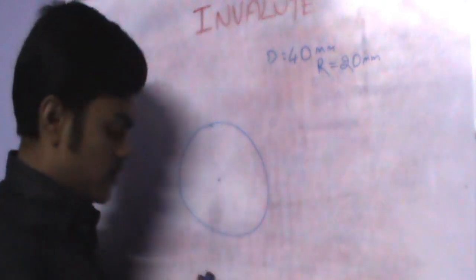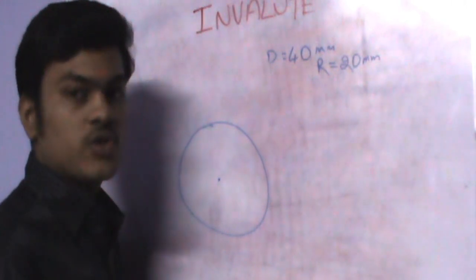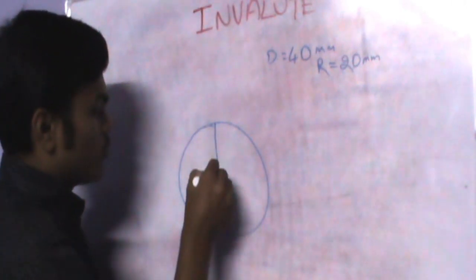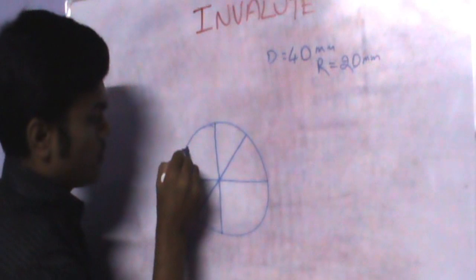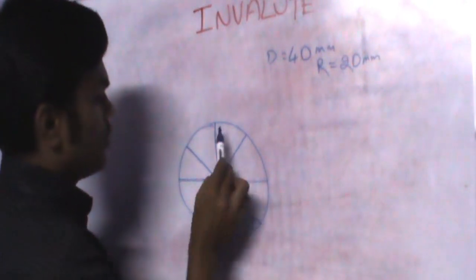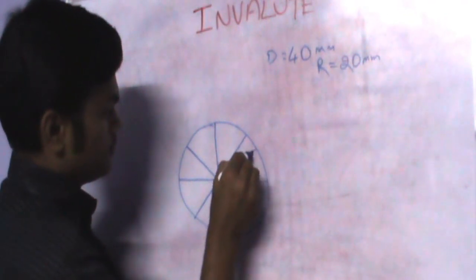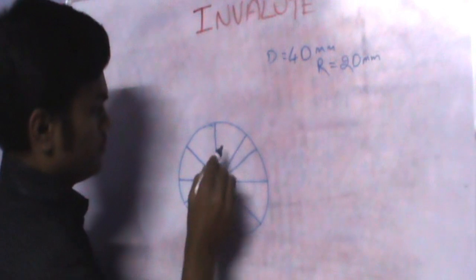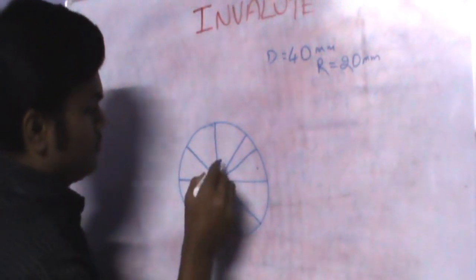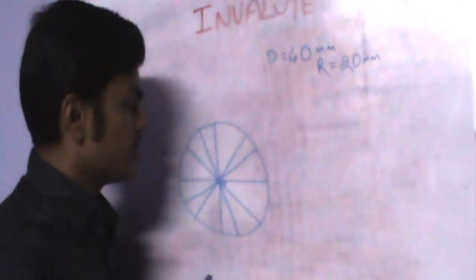The midpoint of the circle is marked. The next step is to divide the circle into 9 or 12 equal parts — it is our choice. Let me divide it into 12 equal parts. This division should be equal. I have now divided the circle into 12 equal parts.